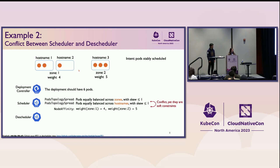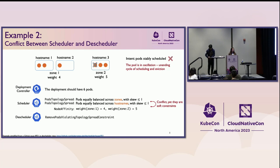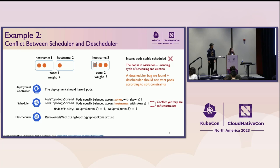This is okay until you configure the descheduler, which tries to remove pods that violate the topology spread constraint. What happens is the pod gets evicted, rescheduled by the scheduler to the same place, then evicted again, and so on — creating oscillations where the pod is in an endless cycle of scheduling and evictions. This is caused by a descheduler bug we found: the descheduler is not looking at all constraints together but one by one, and it shouldn't evict pods according to soft constraints.